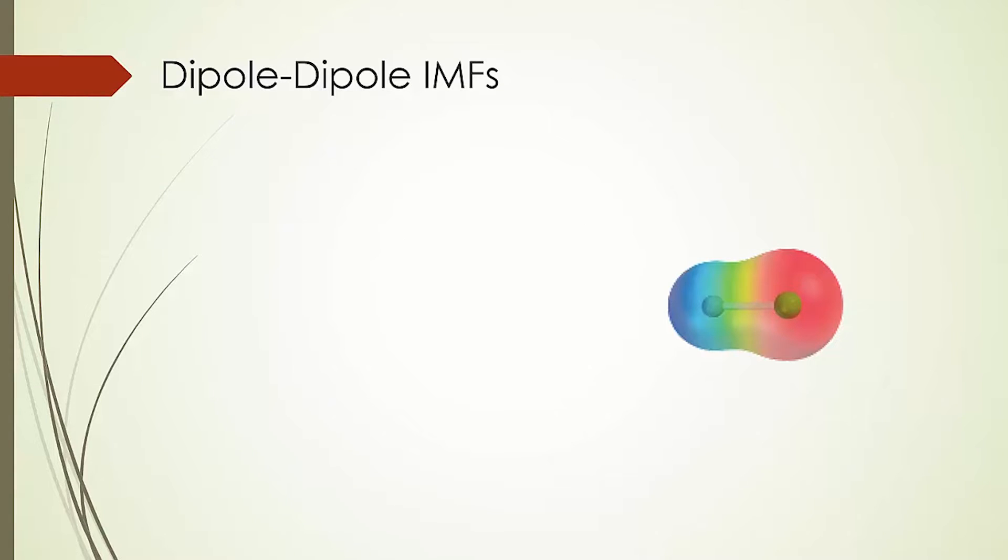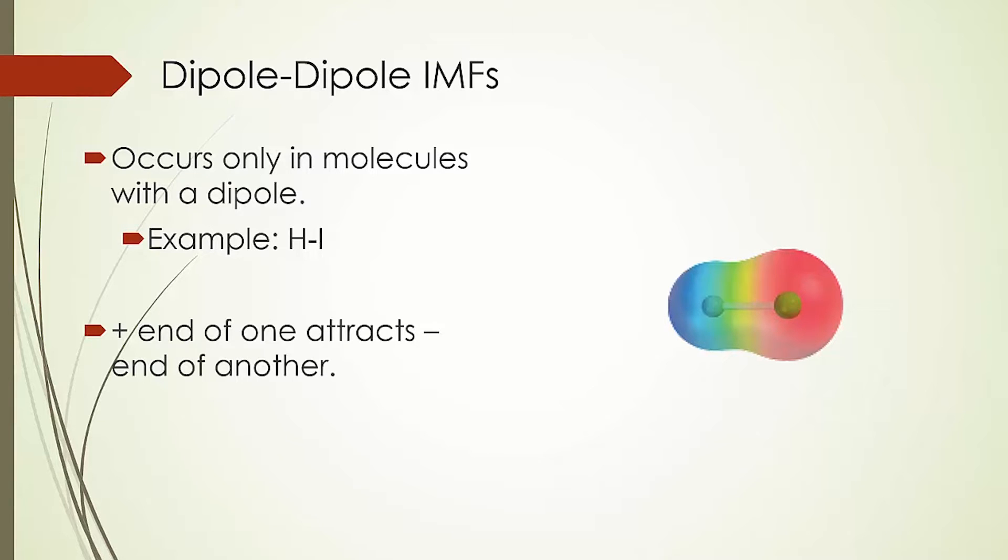As the name implies, these only occur in molecules which have a dipole. They are caused by the partial negative on one side of the molecule interacting with the partial positive on the other side of the molecule. These cause an overall attraction of the molecules to each other.